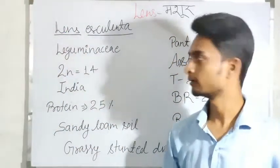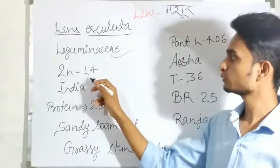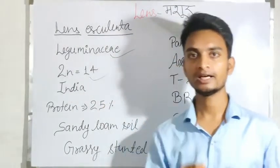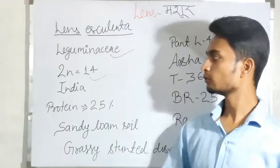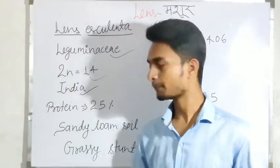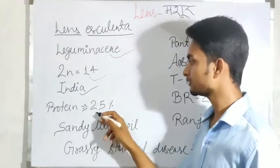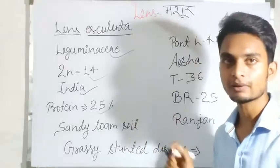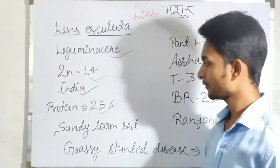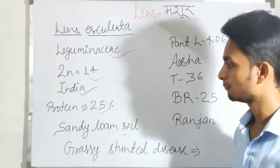Lens esculenta belongs to the family Leguminosae. Its chromosome number is 14. Its origin place is India. Protein content found in lentil is 25 percent.